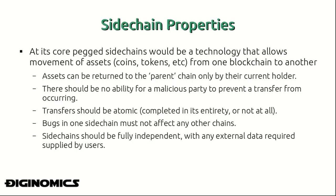At its core, pegged sidechains would be a technology that allows the movement of assets from one blockchain to another. In their specification white paper, Blockstream outlined a few imperative characteristics of how such sidechains would work. These characteristics are: assets are to be returned to the parent chain only by their current holder; there should be no ability for a malicious party to prevent a transfer from occurring; transfers should be atomic, meaning they are completed in their entirety or not at all; bugs in one sidechain must not affect any other chains; and finally, sidechains should be fully independent with any external data required supplied by its users.